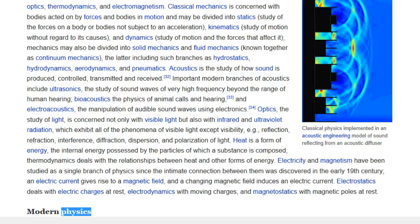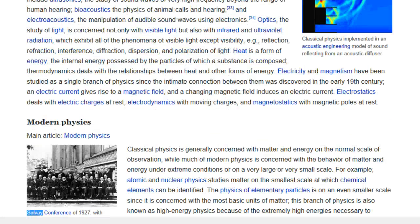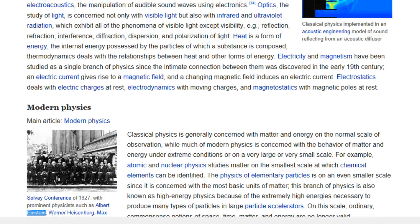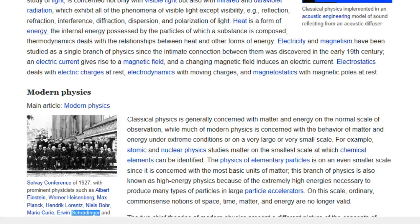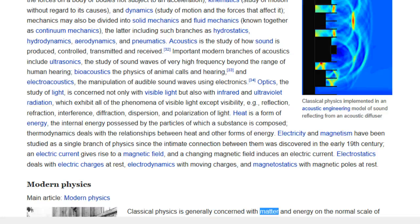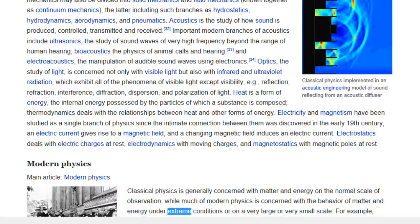Modern Physics. Main article, Modern Physics. Solvay Conference of 1927, with prominent physicists such as Albert Einstein, Werner Heisenberg, Max Planck, Hendrik Lorentz, Niels Bohr, Marie Curie, Erwin Schrödinger, and Paul Dirac. Classical physics is generally concerned with matter and energy on the normal scale of observation, while much of modern physics is concerned with the behavior of matter and energy under extreme conditions or on a very large or very small scale.